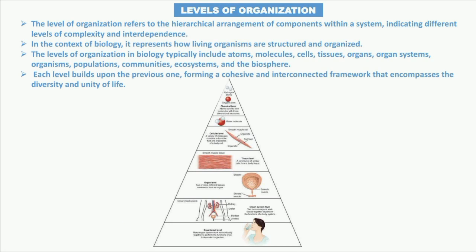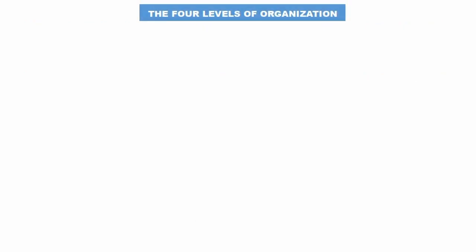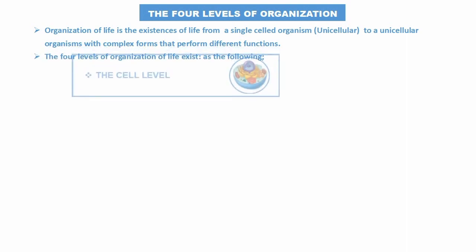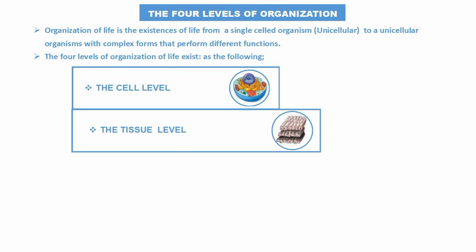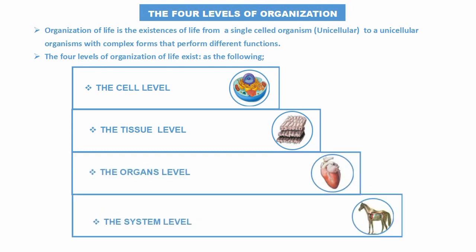As shown in a typical diagram of levels of organization, it starts from the atom. There are four important levels we need to understand well: the cell level, tissue level, organ level, and system level. Organization of life refers to life forms existing from a single cell up to complex organisms performing different functions.